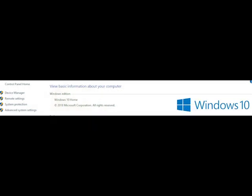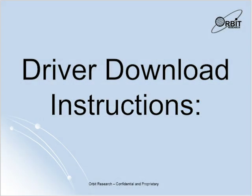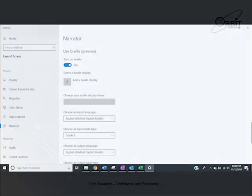To begin, first ensure that your Windows PC version is Windows 10 build 1903 or newer. You will need a driver in order to run Narrator with your Orbit Reader 20. If you do not already have the driver installed, the driver downloads and instructions are as follows.